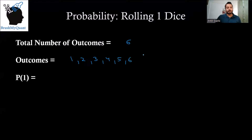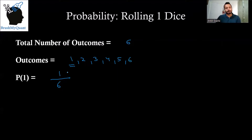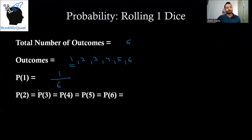If I ask what is the probability of getting one, we know that probability of any event equals number of successful outcomes divided by total number of outcomes. Out of the six outcomes, there is only one case in which I can get a one. So probability of getting a one is one divided by six. Similarly, probability of getting a two, three, four, five, or six is also one divided by six, because all of them occur only once out of those six outcomes.